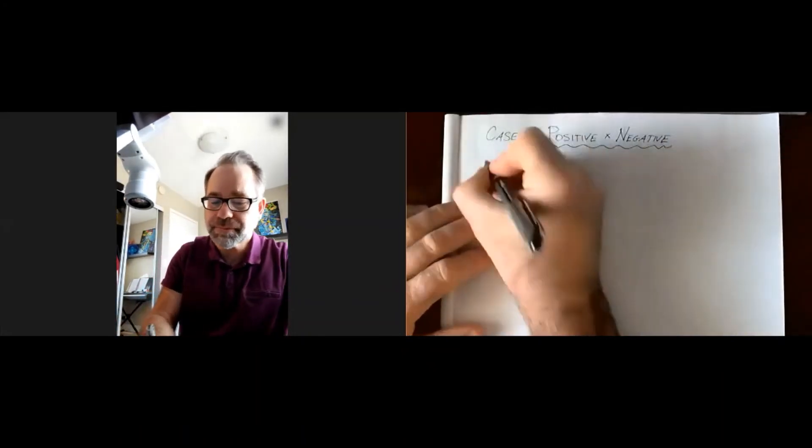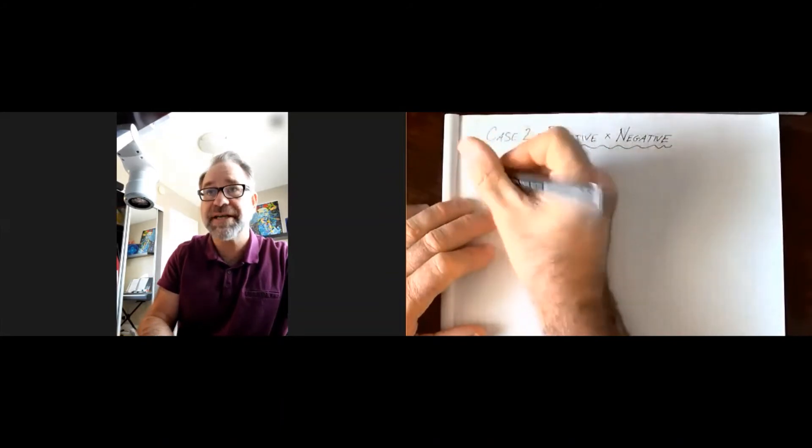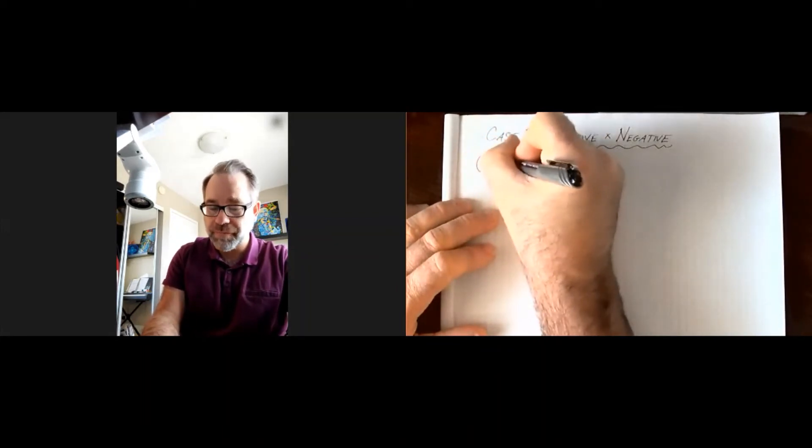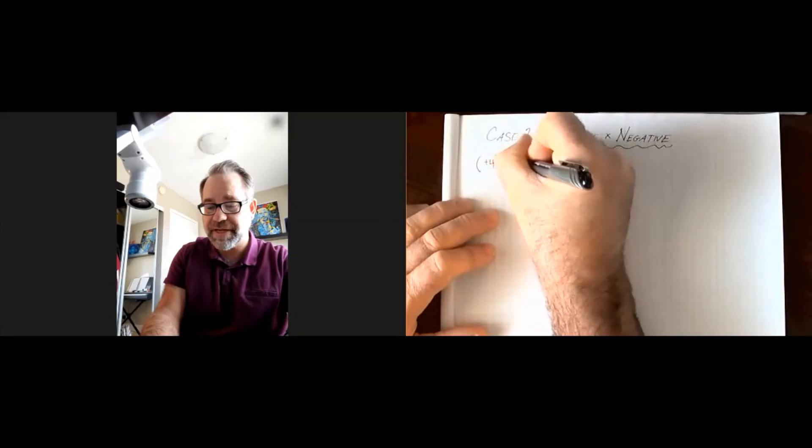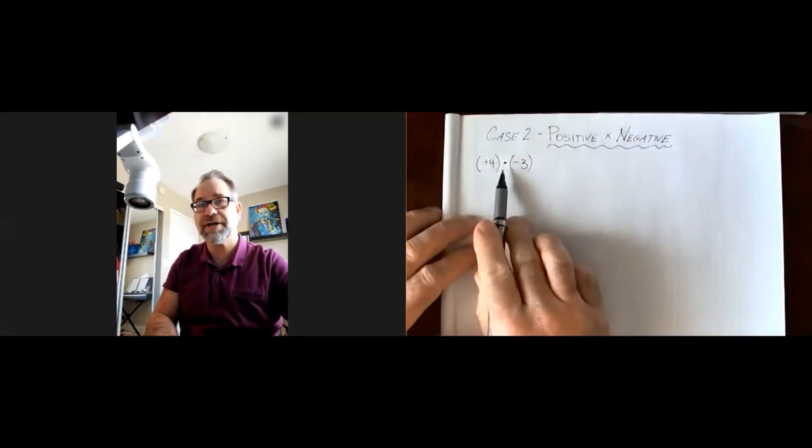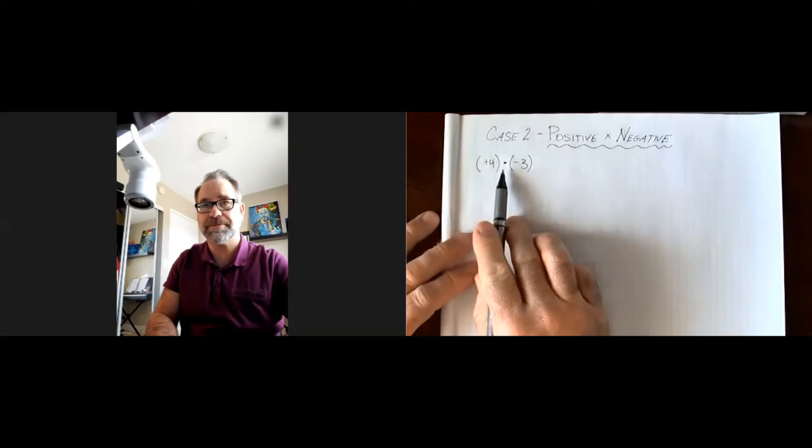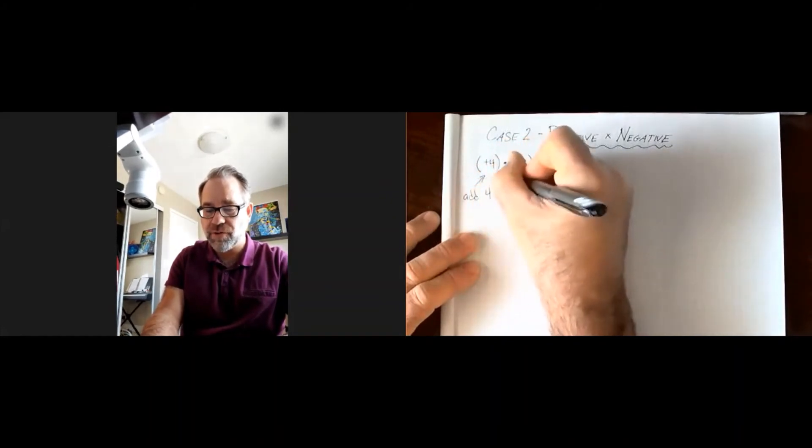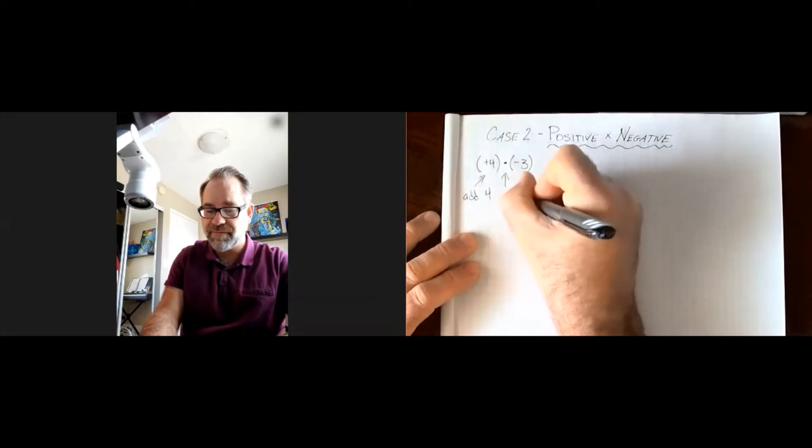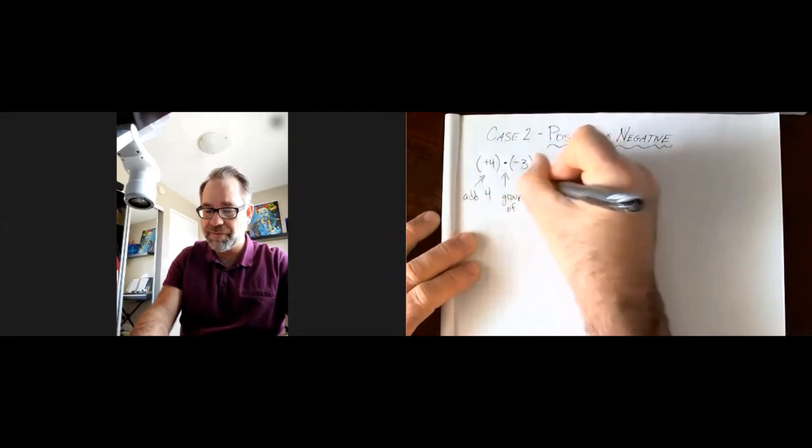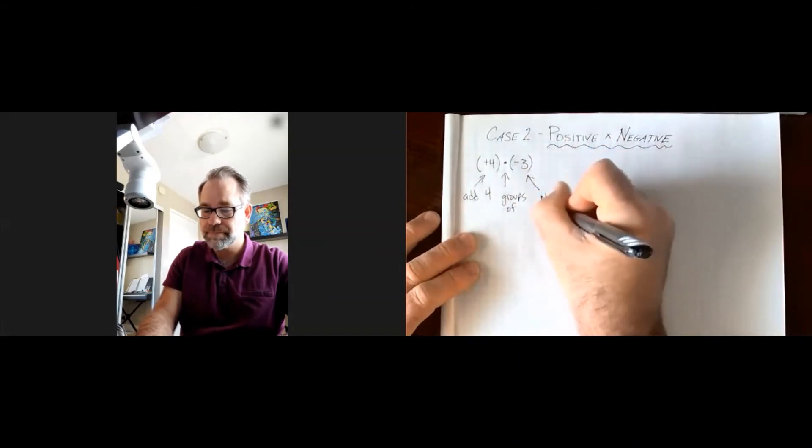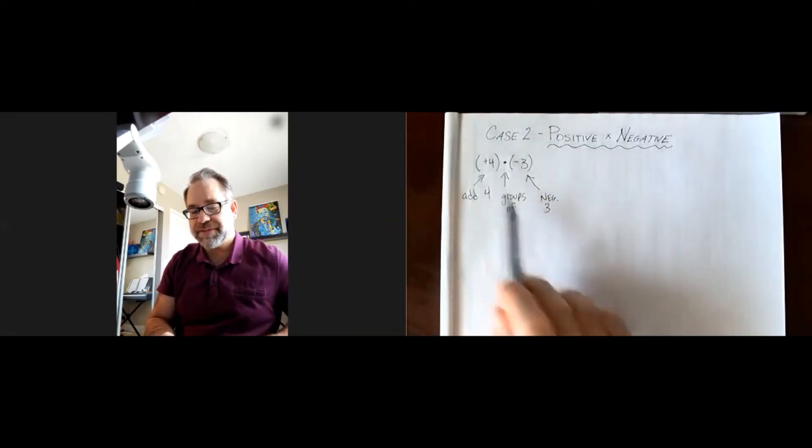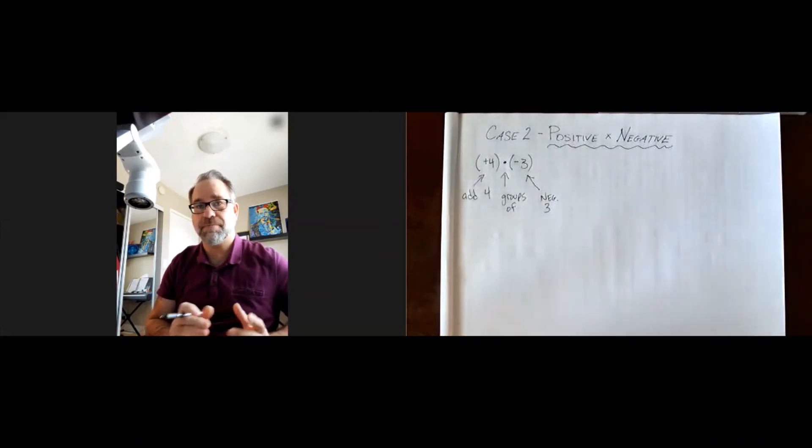The second case, we're going to change the integers up a little bit. Our second case is a positive multiplied by a negative. So we're going to use positive 4, and this little dot here is another symbol for multiplication. We're going to think of it as add four groups of negative 3, and negative 3 needs to be visible in our diagram.